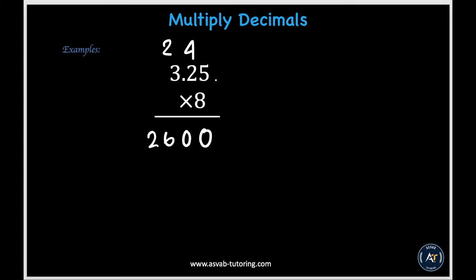Now we need to figure out where to put the decimal point. We count up all the decimal places in both numbers. In 3.25, the decimal point is after two places — so we have 2 decimal places. In 8, there is no decimal place. So in total, the decimal point should be placed after two decimal places. Starting from the right of our final answer and moving two places to the left, our decimal ends up between the 6 and the first 0. Our final answer is 26.00, which is basically the same as 26.